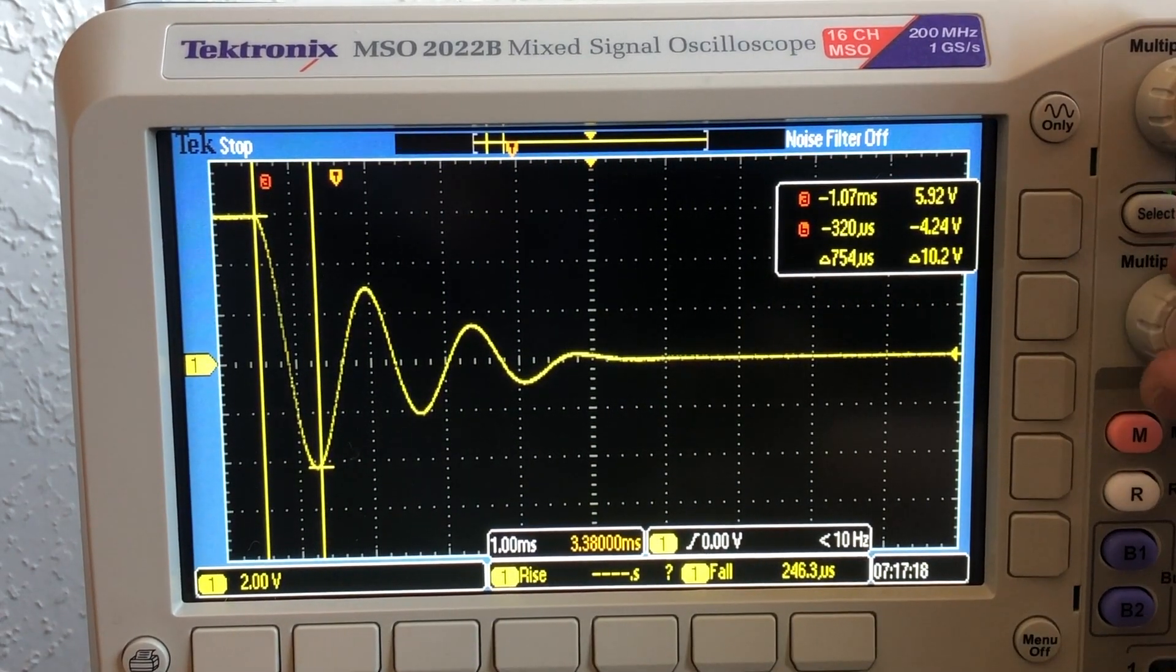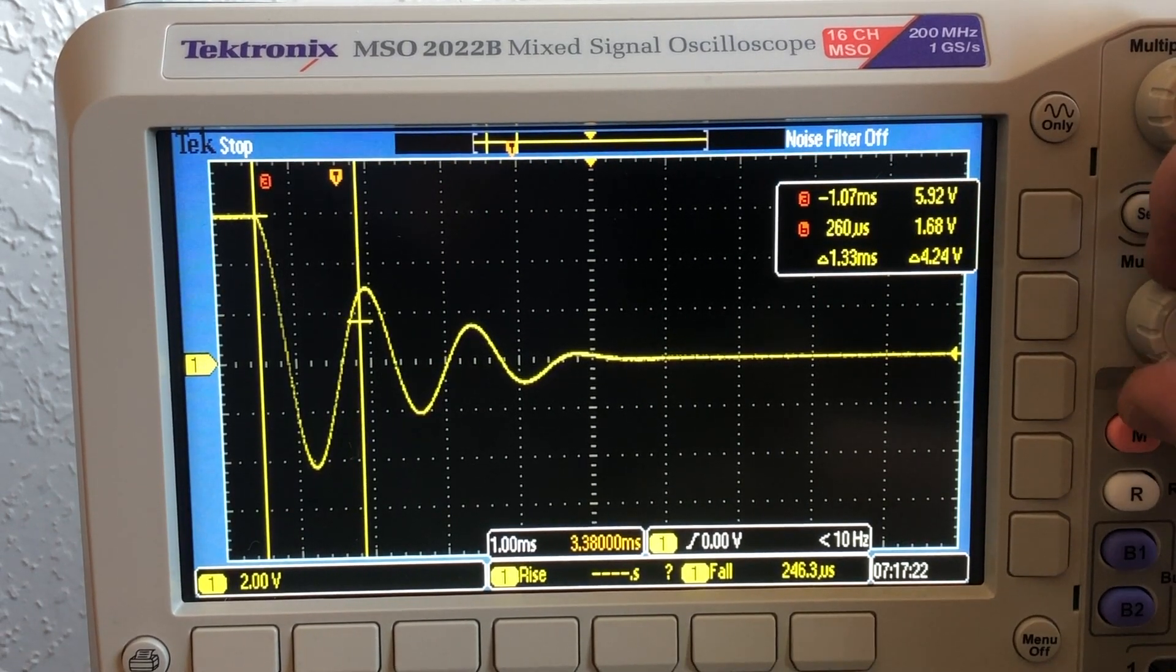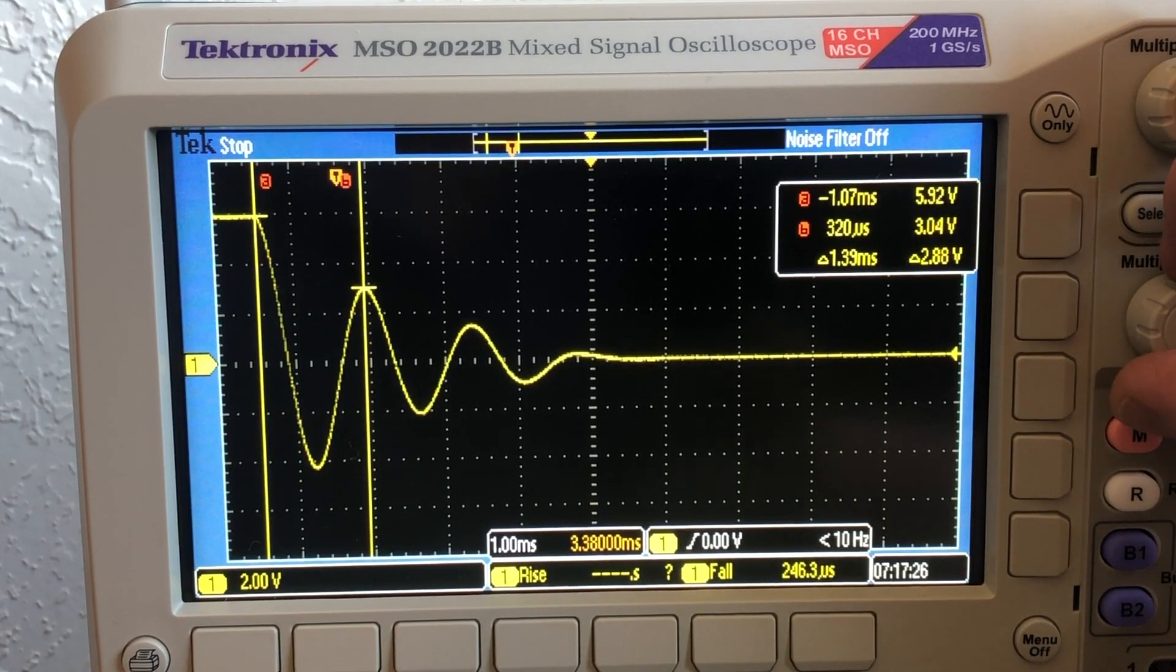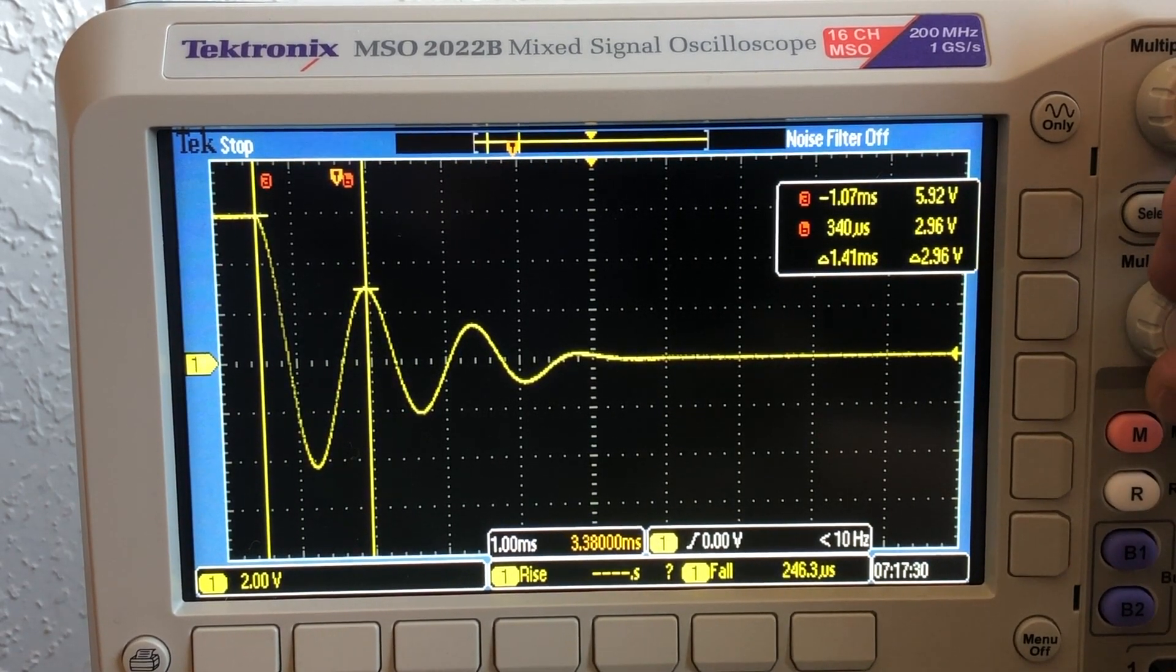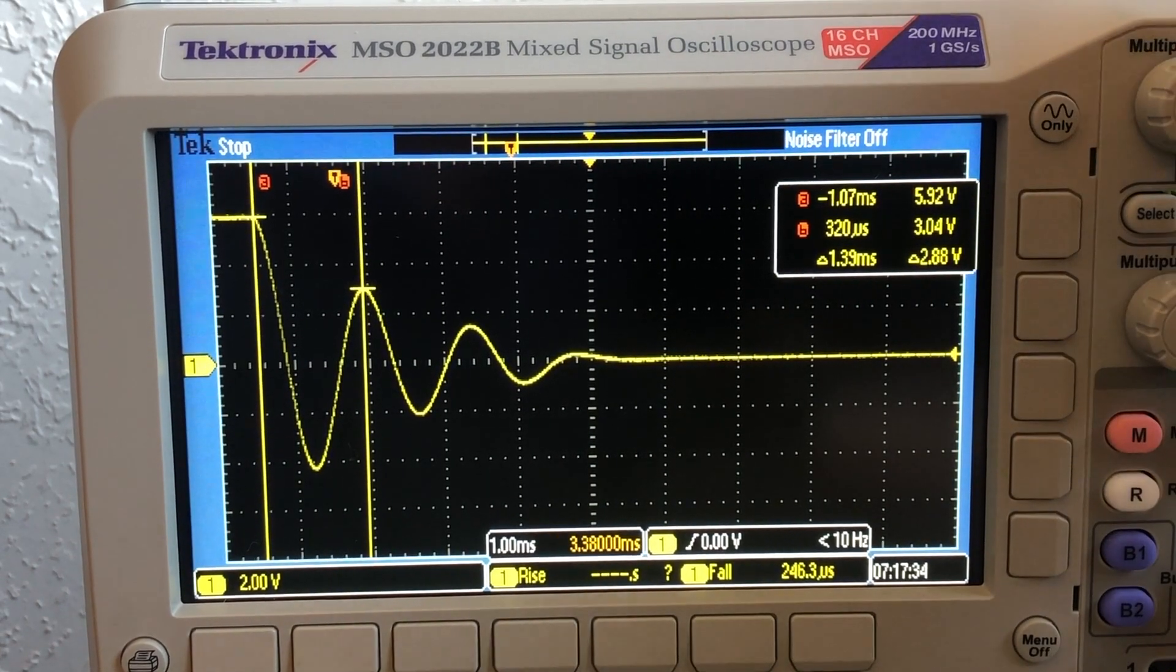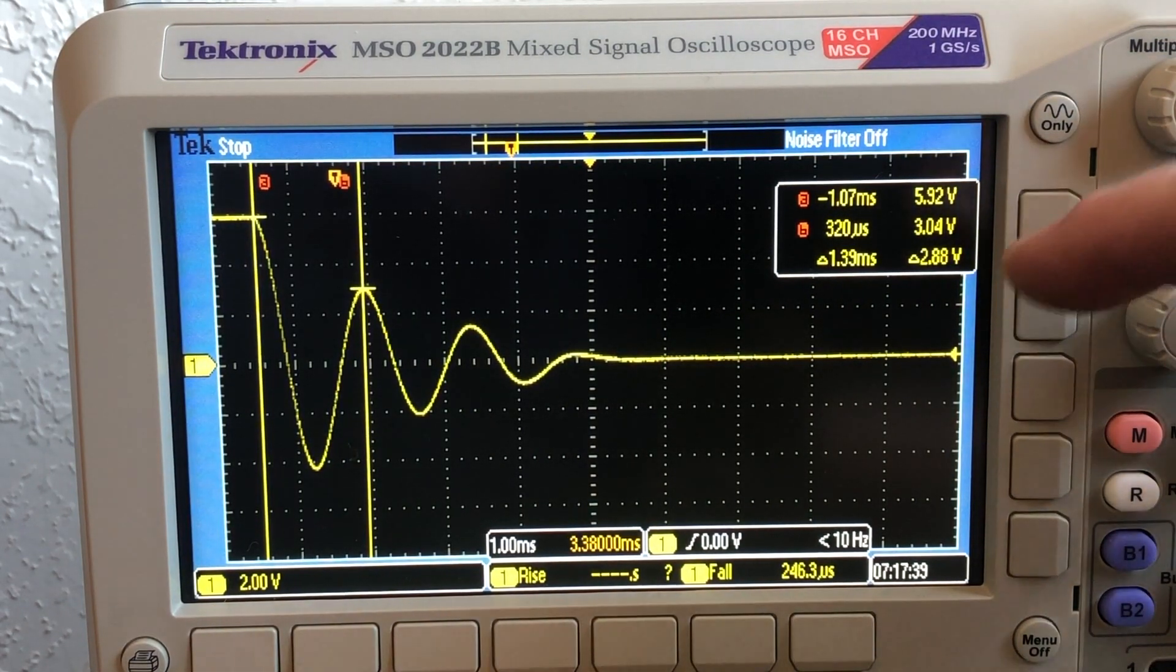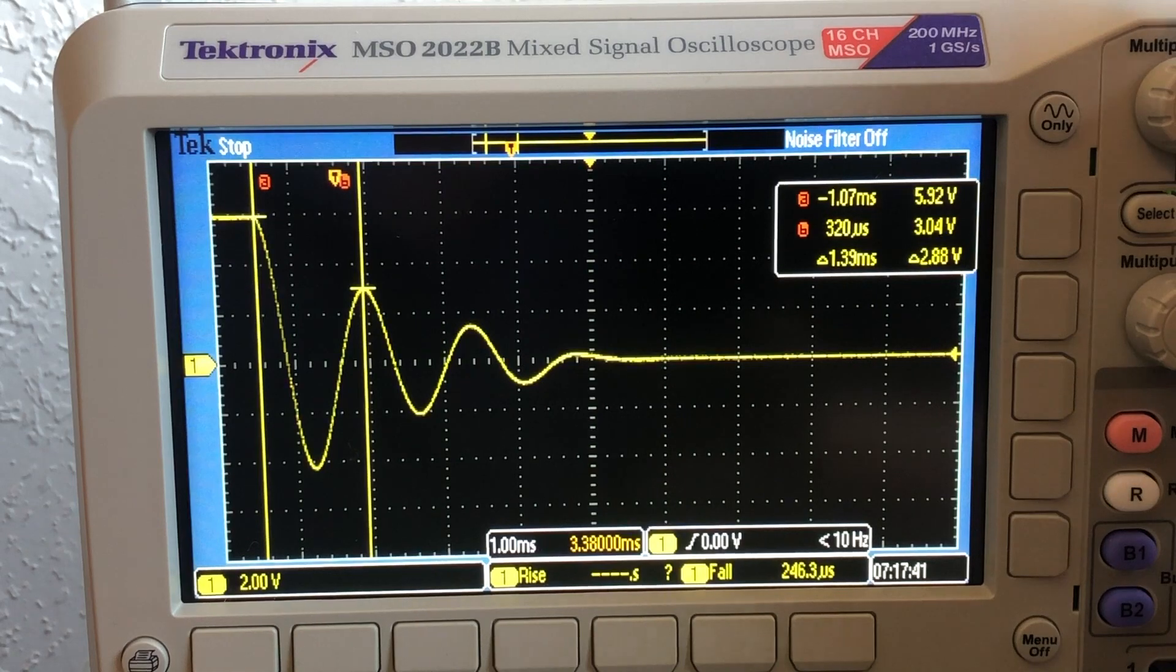Now I'll move to the next peak. Looks like that was 1.39 milliseconds later. You can see the value of that peak is 3.04 volts.